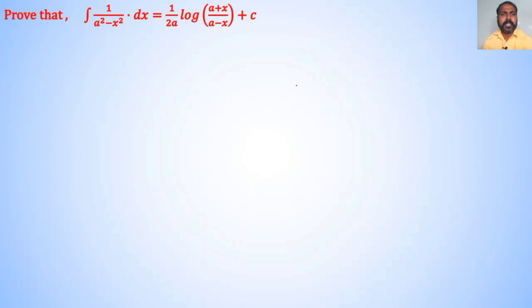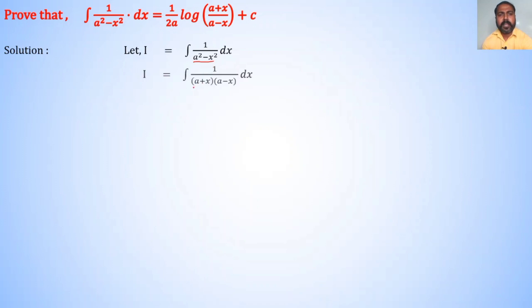Next, prove that ∫1/(a²−x²)dx = (1/2a)log|(a+x)/(a−x)| + c. Solution: let I = ∫1/(a²−x²)dx. We know the factors of a²−x² are (a+x) and (a−x). Therefore I = ∫1/((a+x)(a−x))dx. Since a+x and a−x are linear expressions, when we add them the x terms cancel, giving (a+x) + (a−x) = 2a.